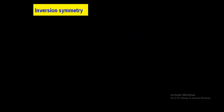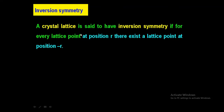We have already studied before, when we studied about symmetry elements and symmetry operations, I already told you what is inversion symmetry, so we are going to recall it. A crystal is said to have inversion symmetry if for every lattice point at position r, there exists a lattice point at exactly equal distance but at the opposite side — that is, at position minus r. This inversion symmetry is only applicable to 3D lattices.